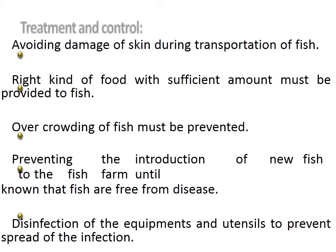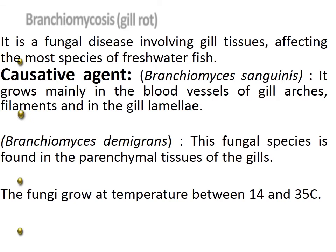Treatment and control of saprolegniasis: medication with phenoxyethanol or chloromycin through feed is effective. Avoid skin damage during transportation of fish. Provide the right kind of food in sufficient amounts. Prevent overcrowding. Prevent introduction of new fish to the farm until confirmed disease-free. Disinfect all equipment and utensils to prevent spread of infection.